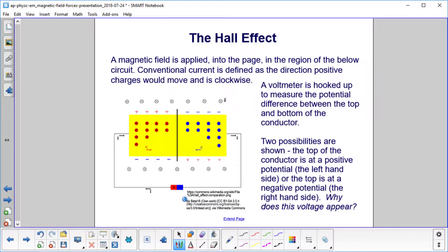A magnetic field is applied into the page. These Xs mean you have a magnetic field in the vicinity of this circuit. Conventional current is defined as the direction positive charges would move. Here's our battery, here's the positive end, so conventional current would go this way.